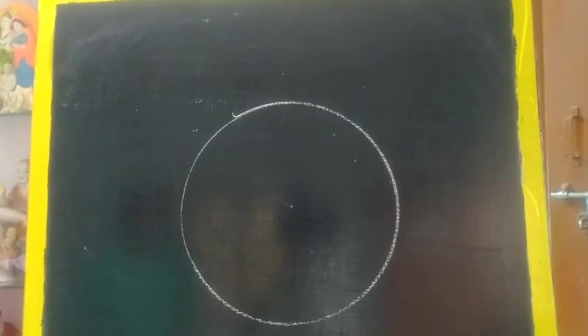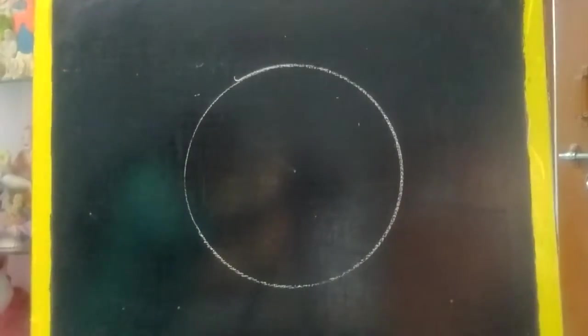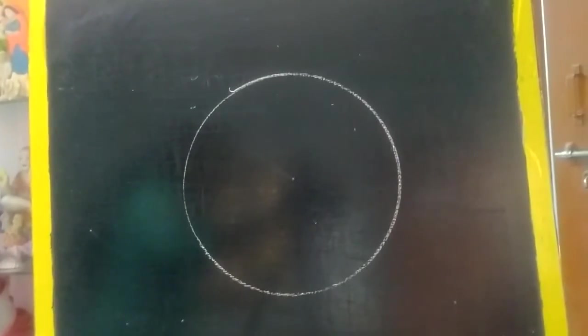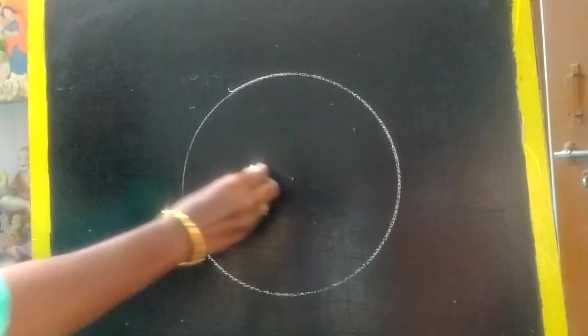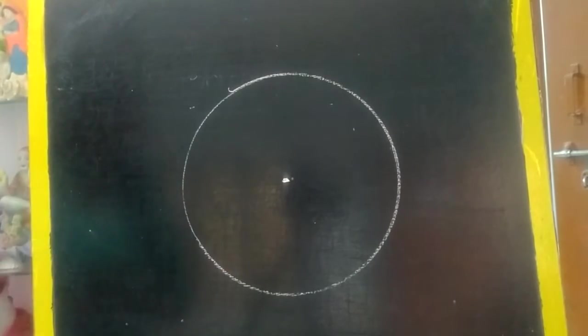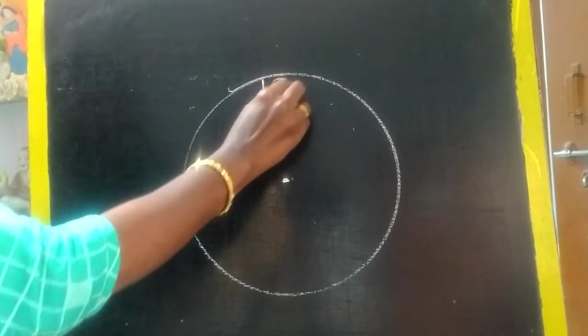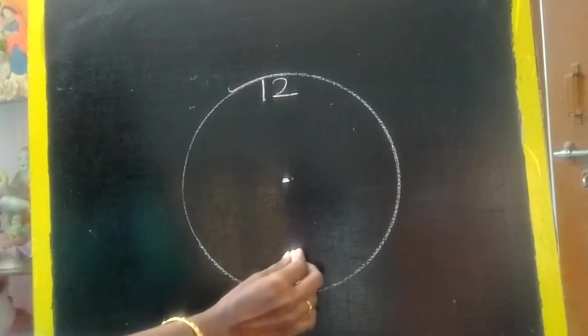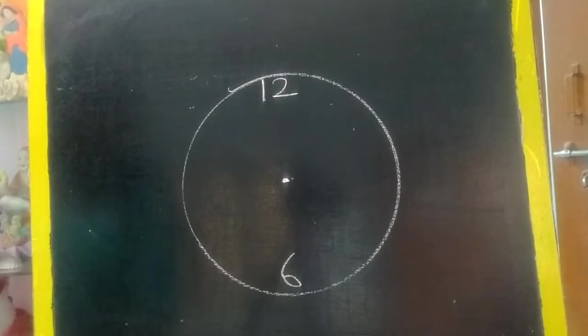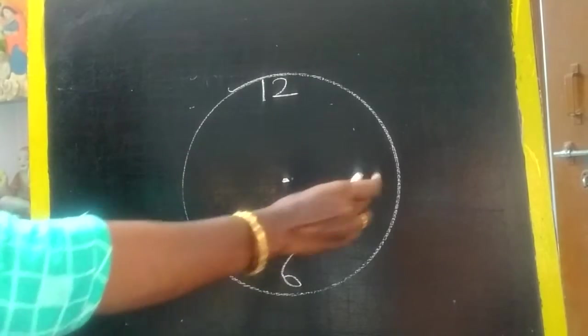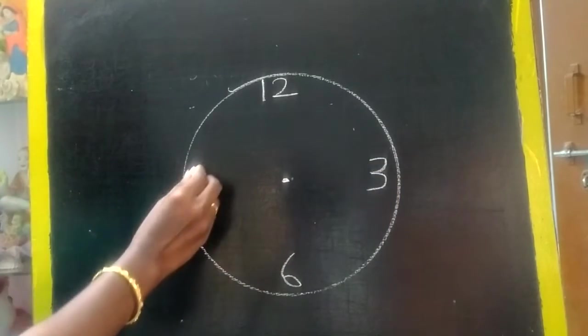Next is you have to write numbers. For that some rules are there. First thing, keep a center point like this. Next, straight to that, here you have to write 12. This is the rule. 12 straight down 6. You can keep scale also and check it should be straight. And here 3, here 9.